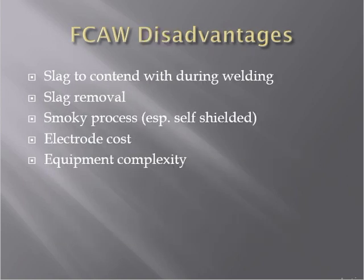The disadvantages of FCAW include: slag entrapment during welding, and slag removal can be very difficult; it is a smoky process — producing more smoke than SMAW and GMAW; and equipment complexity — setting current, voltage, and other parameters is difficult, and if not set properly, weld appearance quality will be very poor.